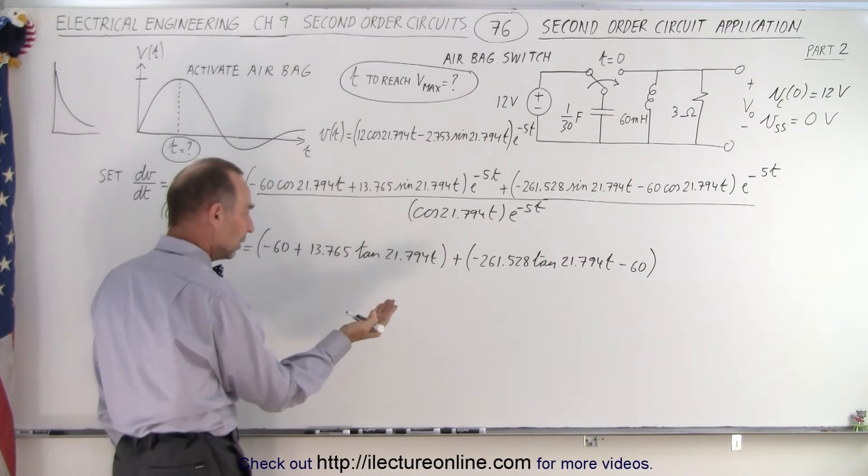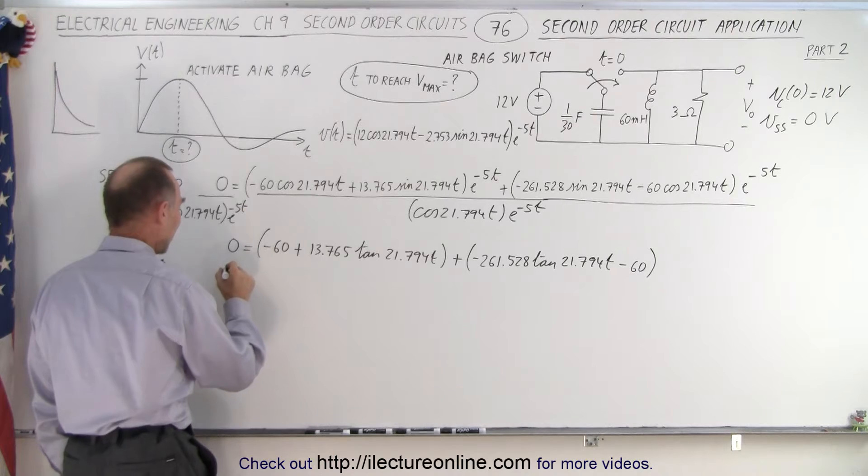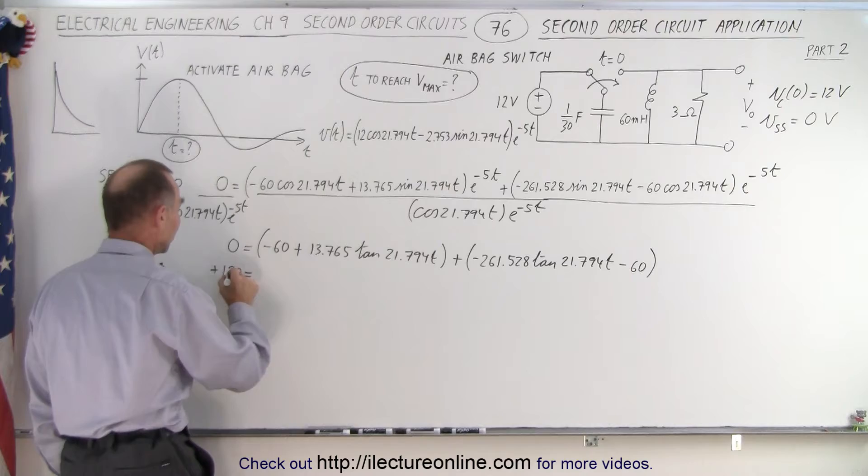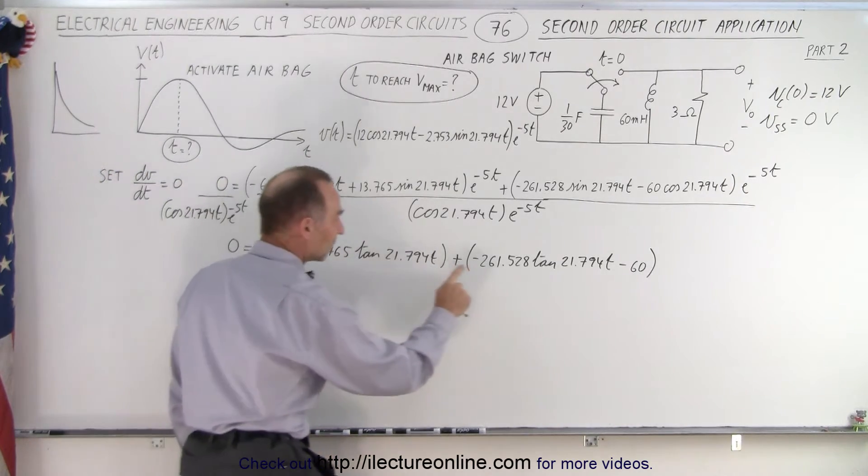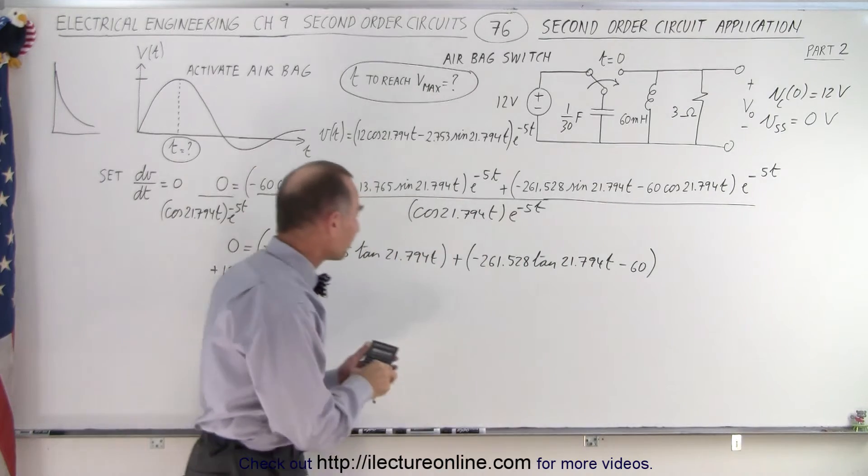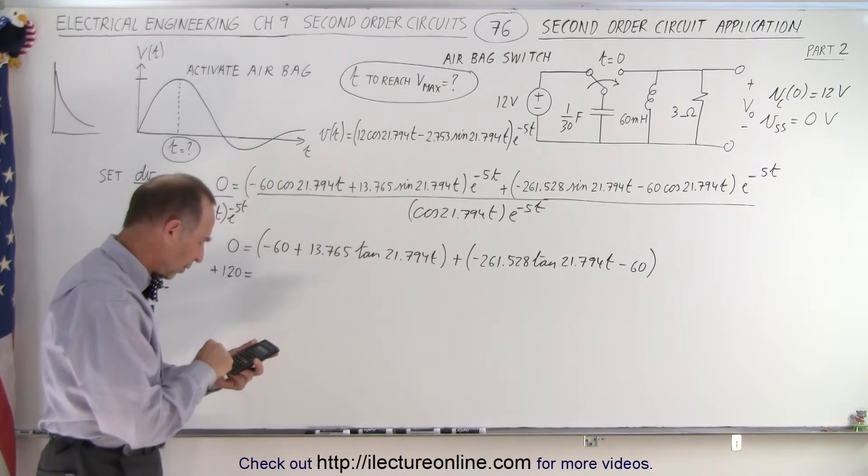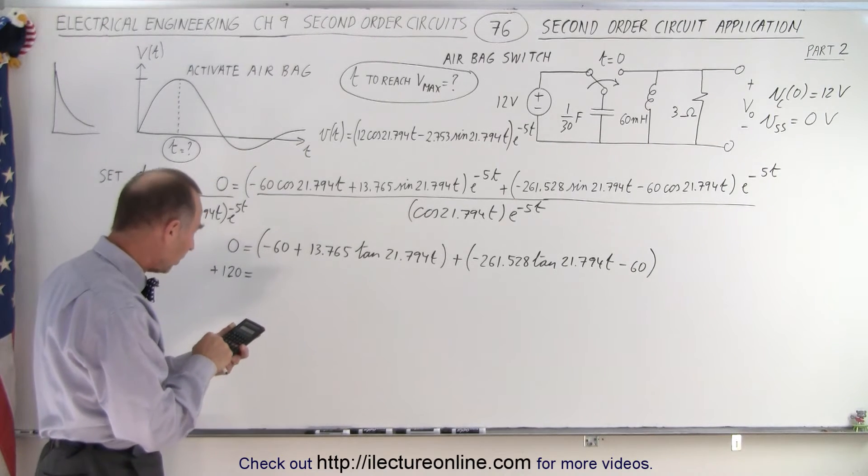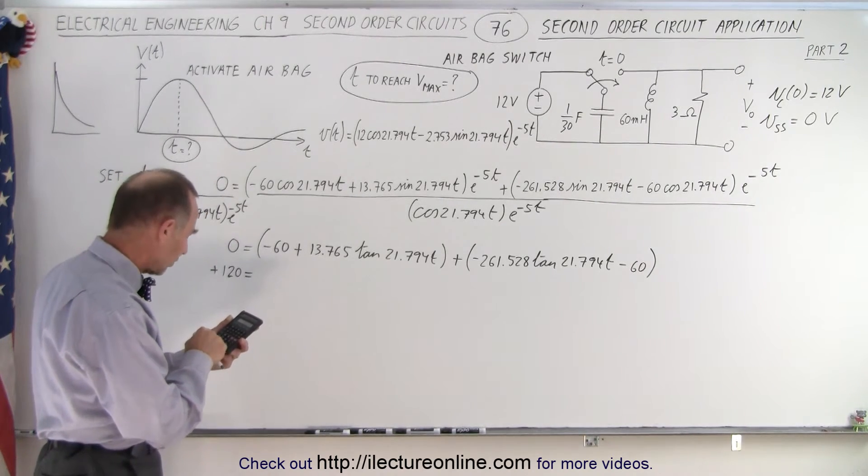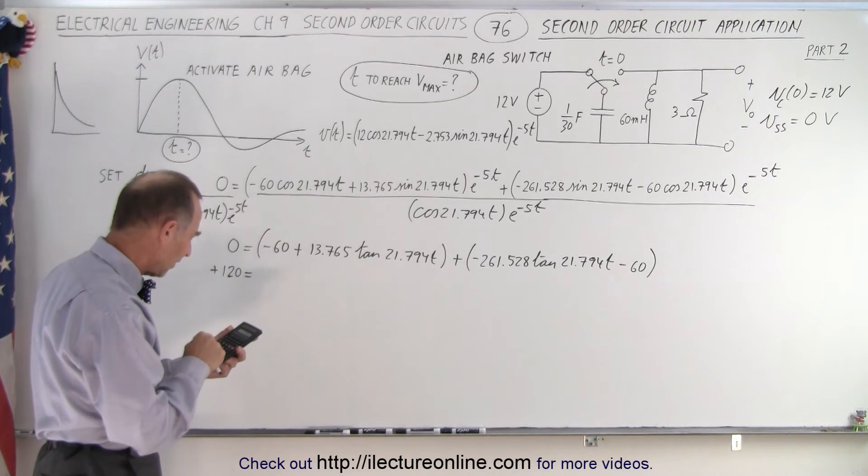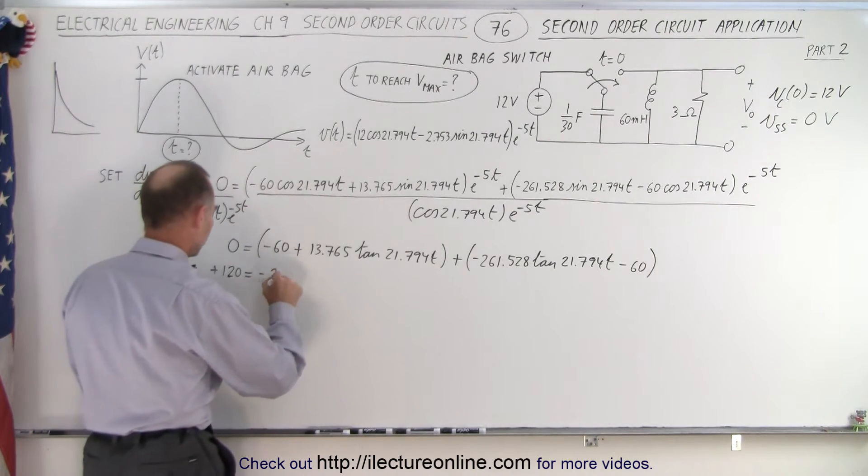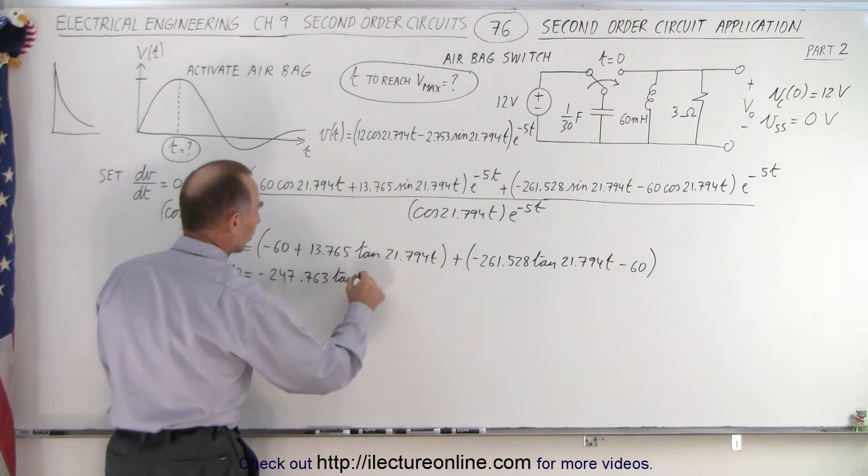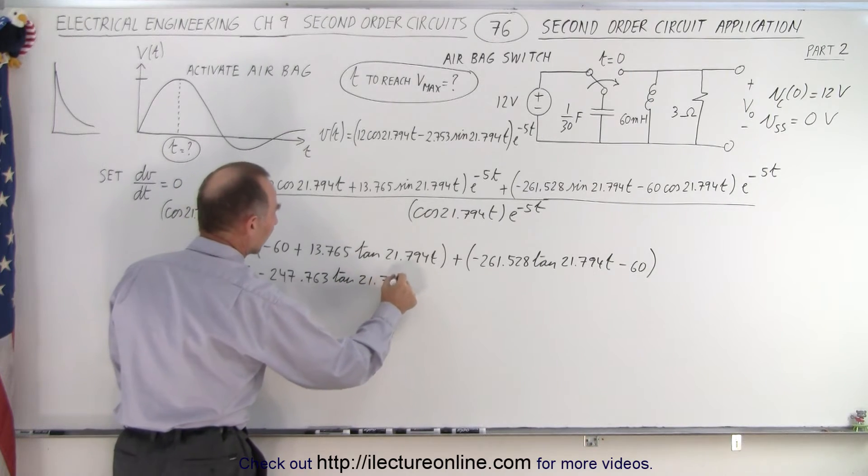So here we have a minus 60 and a minus 60, that's minus 120. We can move that to the other side, so that means that we have plus 120 on this side. So plus 120 is equal to - I have a 13.765 and a minus this, so let's combine the two on the right side. So we have a 261.528, that's a minus, plus we have 13.765, and so we end up with a minus 247.763 times a tangent of 21.794t.